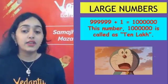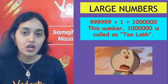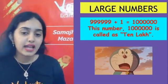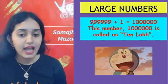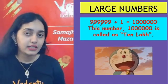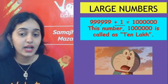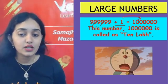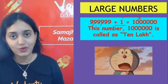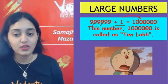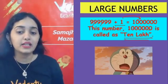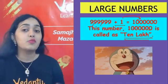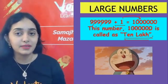Next is even larger numbers — learning about ten lakh. How do we get ten lakh? Simple: 9,99,999 plus 1 gives us ten lakh, which has 6 zeros. Ten lakh is the smallest seven-digit number.